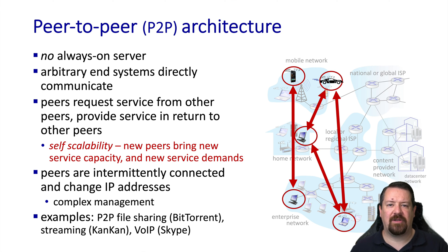There are two main challenges to the operations of peer-to-peer networks. One is that the peers may join or leave the network, so the service provided by a particular peer will come and go. The second is that over time the peer's IP address is likely to change. The most common peer-to-peer application today is BitTorrent, so we'll look at that as an example in a few slides.